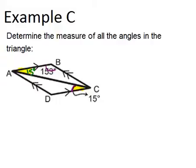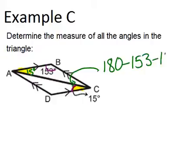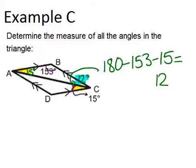Once we know that, we can find the third angle in the upper triangle by doing 180 minus 153 minus 15 — because the three angles in a triangle have to add up to 180 degrees. So 180 minus 153 minus 15 gives us 12, meaning that third angle has to be 12 degrees. That 12-degree angle is alternate interior with the angle on the other side, so that angle will also have to be 12 degrees.